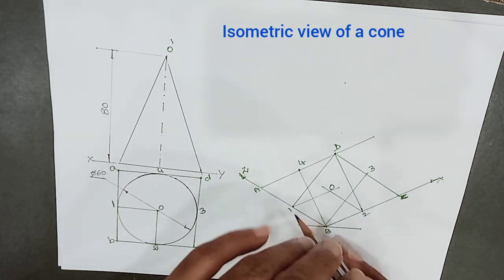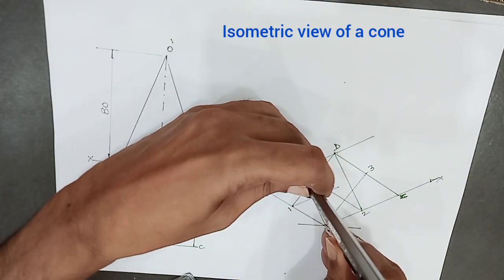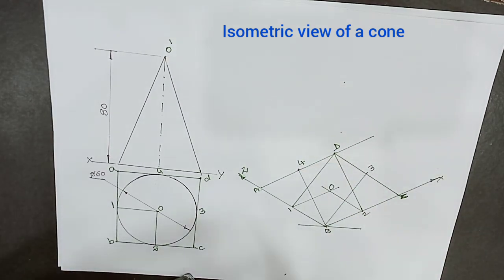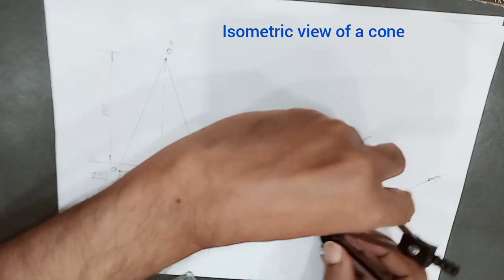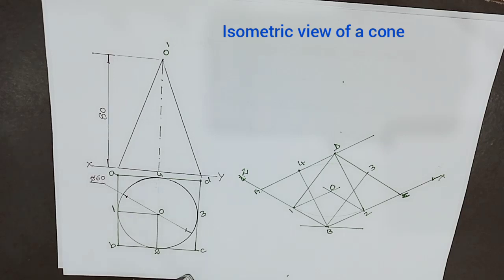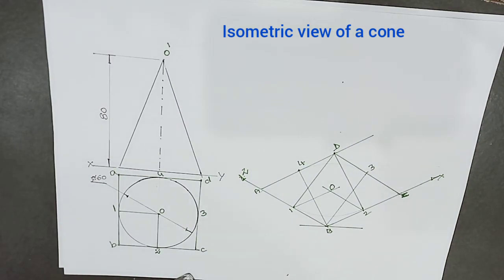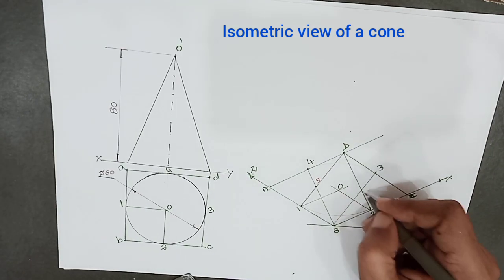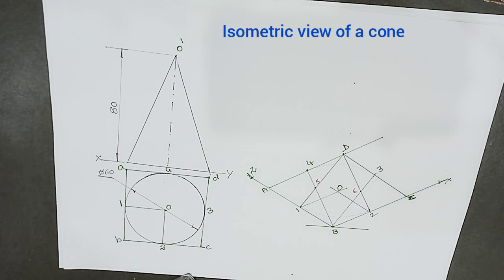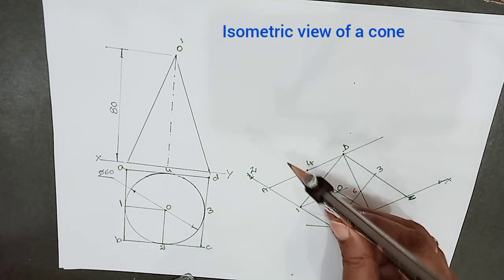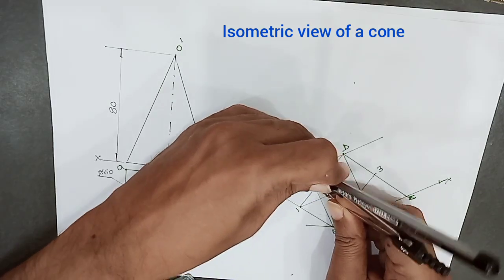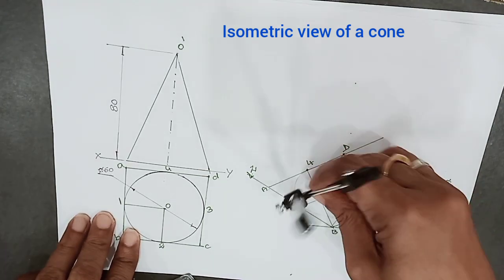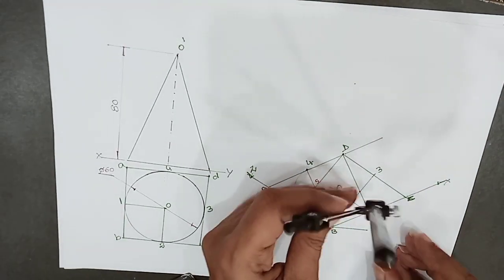With compass, B as center and B4 as radius, draw an arc. Similarly, D as center and D1 as radius, draw an arc. Name these intersection points as 5 and 6. Now with 5 and 4 as radius, draw an arc. Similarly, with 6 and 3 as radius, draw an arc. Drawing the circle in isometry is completed.